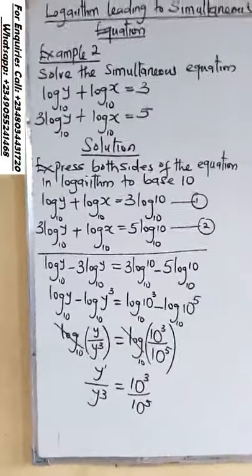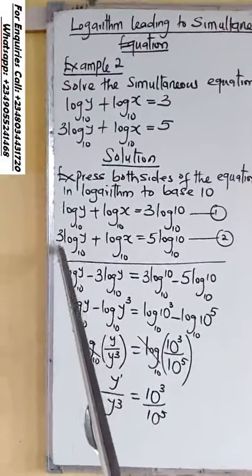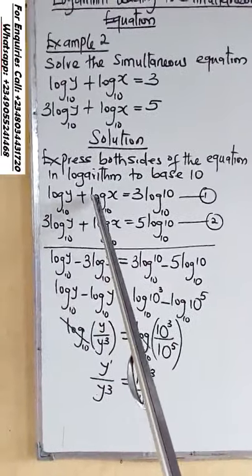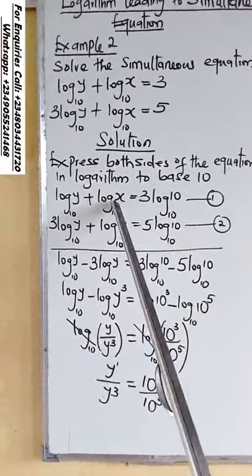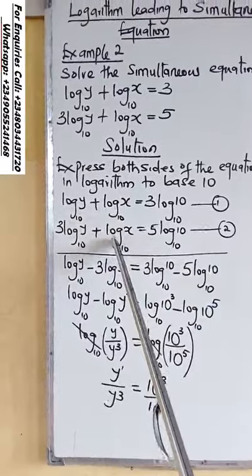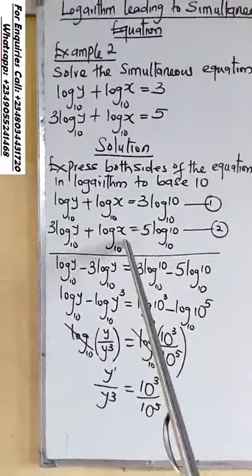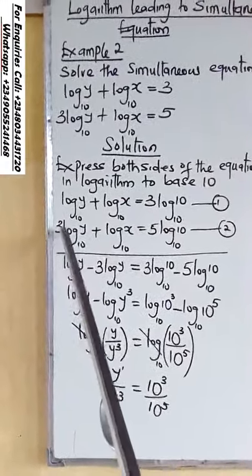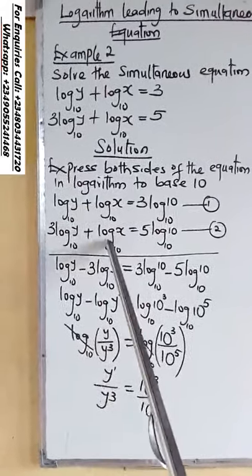So you solve using simultaneous elimination. We subtract because we have a similar log term in both equations — log x base 10 appears in both equation 1 and equation 2. Since they are the same, you eliminate them using minus. So log y minus 3 log y equals to log x minus log x, which is 0.